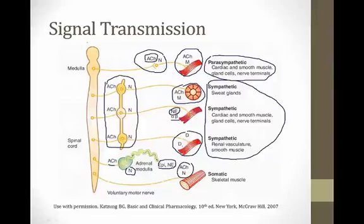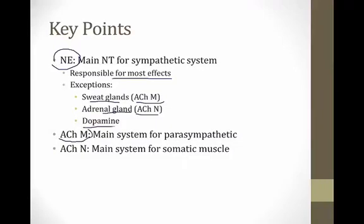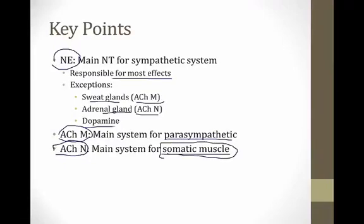Key summary points: norepinephrine on alpha and beta receptors is the main neurotransmitter for the sympathetic system, with exceptions for sweat glands (acetylcholine/muscarinic) and the adrenal gland (acetylcholine/nicotinic). Acetylcholine on muscarinic receptors is the main system for the parasympathetic. Acetylcholine on nicotinic receptors is the main system for somatic muscle. When you activate or block nicotinic receptors, you will primarily affect somatic muscle — a very helpful rule of thumb.